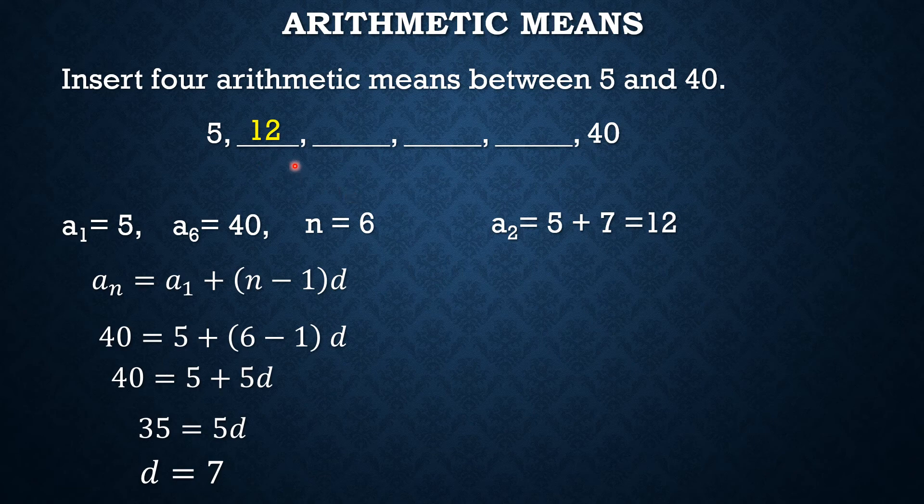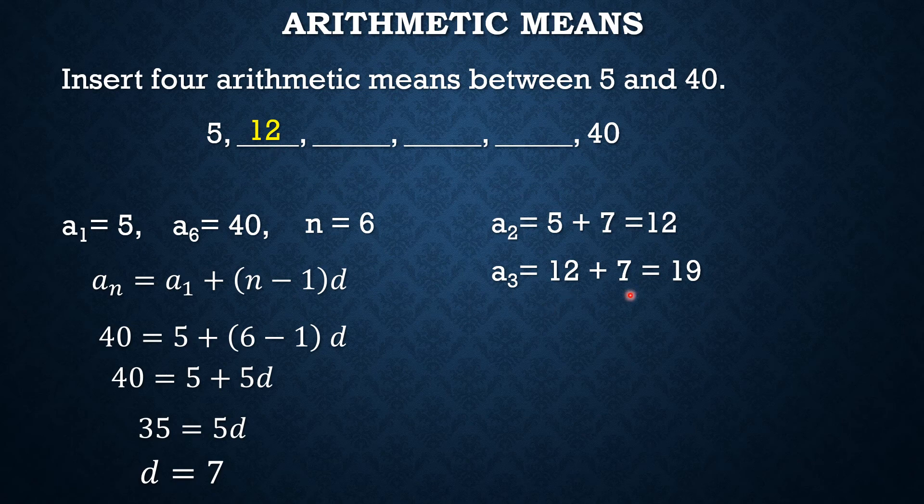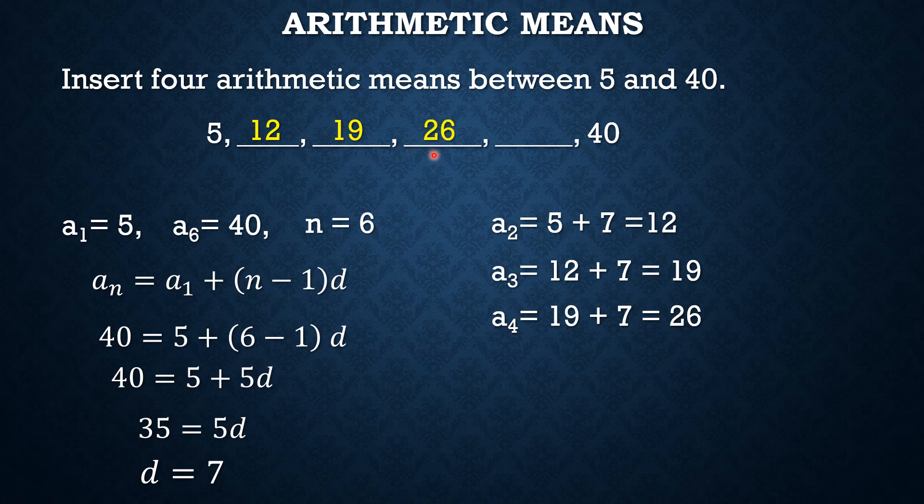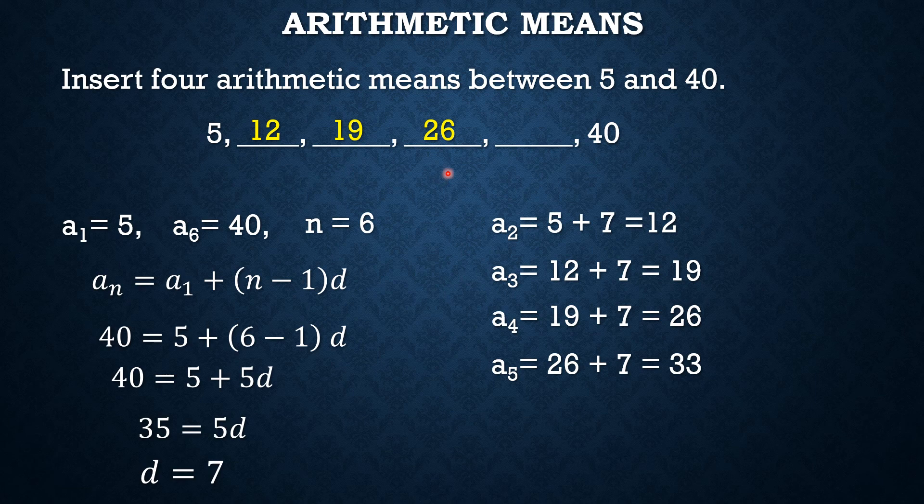Next, to get the value of a sub 3, we just simply have to add 12 to the common difference 7. So 12 plus 7 is 19. Continuing the process, we get a sub 4 is equal to 19 plus the common difference 7 and that is 26. And for our a sub 5, 26 plus the common difference 7, that gives us 33.